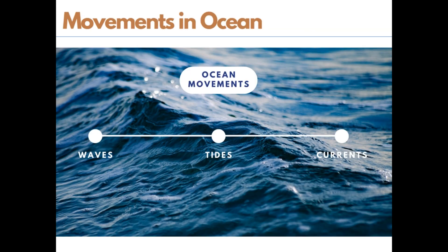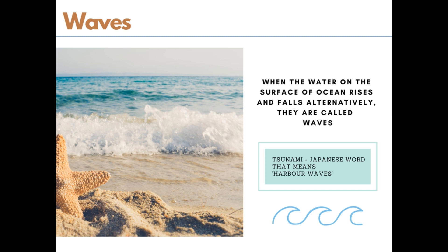Now let's see about the movements that occur in the ocean. Ocean movements can be classified into three categories: waves, tides, and ocean currents. Waves are formed when wind scrapes across the ocean — the stronger the wind blows, the larger the wave will be. When water on the ocean rises and falls alternately, we call them waves. During storms, wind blows at very high velocity and causes massive destruction. You can recall the Odisha cyclone of 1999 from the last chapter.